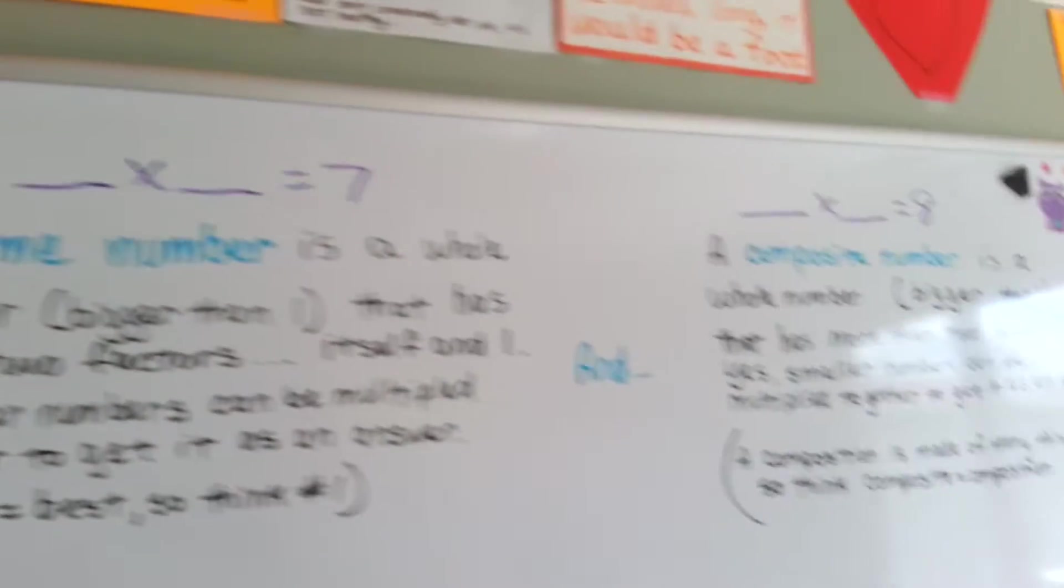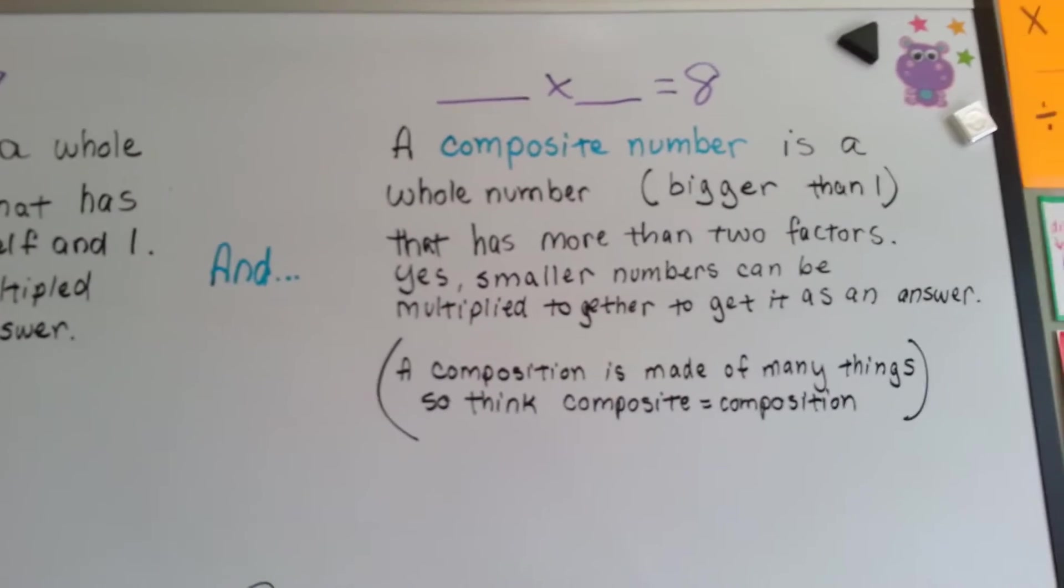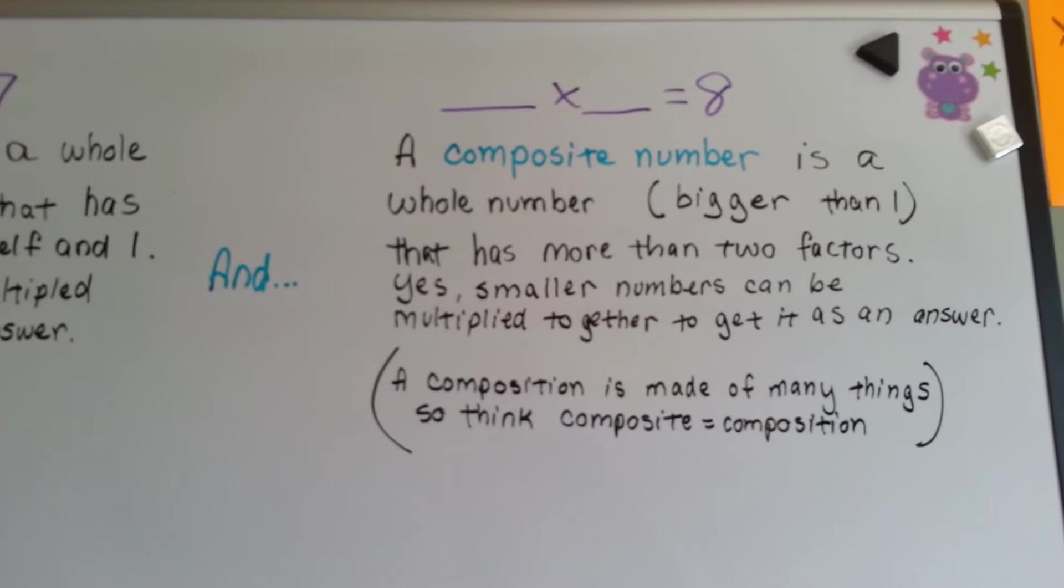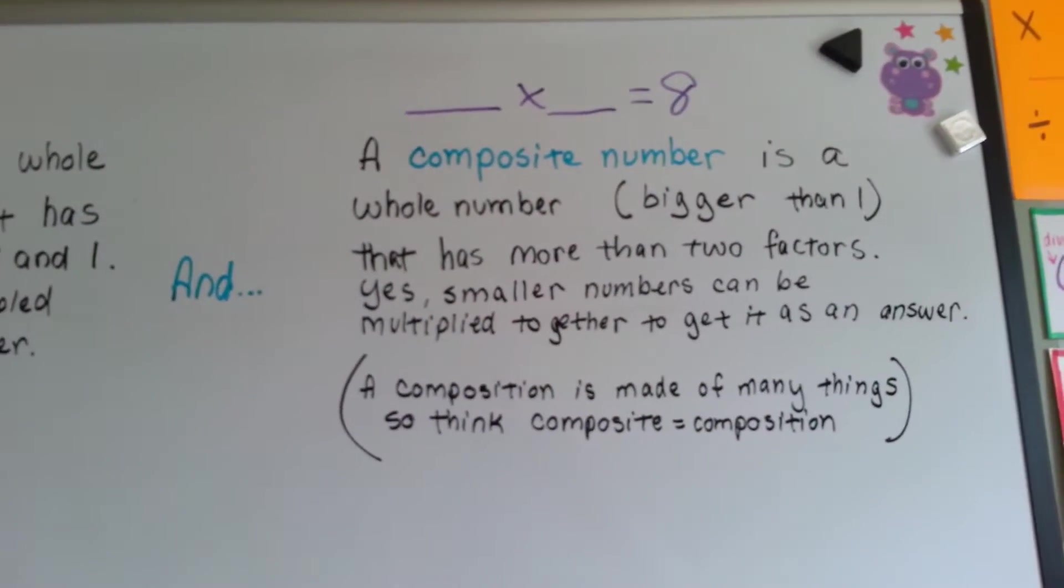So what's a composite number? A composite number is a whole number that is bigger than one, that has more than two factors. Yes, smaller numbers can be multiplied together to get it as an answer.